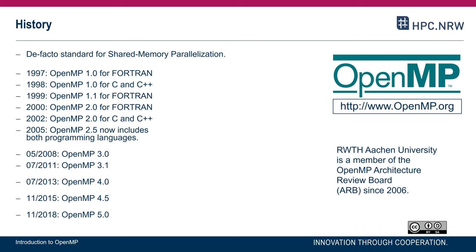OpenMP version 4 from 2013 finally added support for accelerator programming, like supporting GPUs. OpenMP version 5 brought support for the tool interface. All those major releases bring something that is really new. Depending on when you watch this video, OpenMP version 5.1 might have been released, as it is scheduled for release in November 2020.